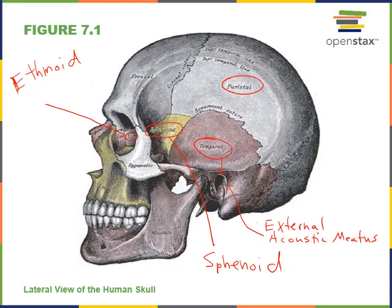Next is O for occipital. The occipital bone is found as the most posterior bone, forming the posterior floor and posterior wall of the cranium. Last is frontal: the frontal bone forms the anterior wall of the cranium, the forehead, and the roof of the cranium anteriorly, as well as part of the anterior floor of the cranium.